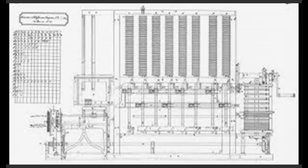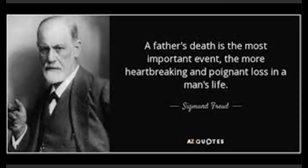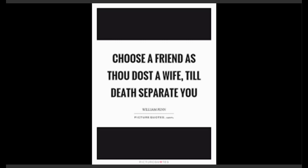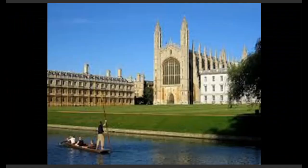On his father's death in 1827, Babbage inherited a large estate valued at around 100,000 pounds, making him independently wealthy. After his wife's death in the same year, he spent time traveling. In April 1828, he was in Rome, relying on Herschel to manage the Difference Engine project. When he heard that he had become professor at Cambridge — a position he had sought three times — he had already been away for some years.